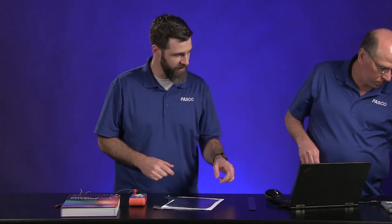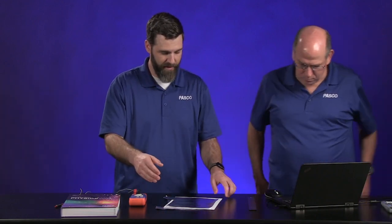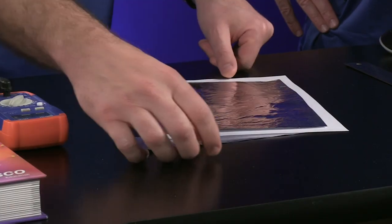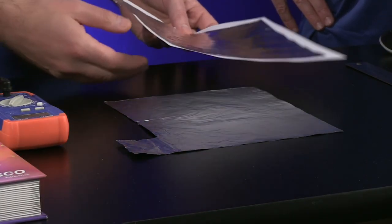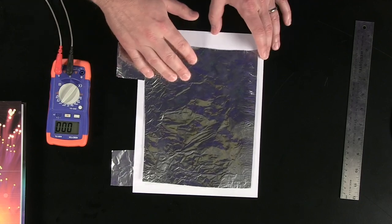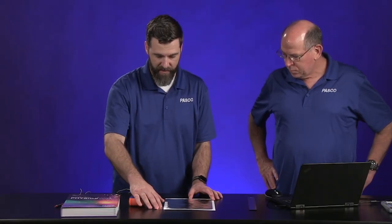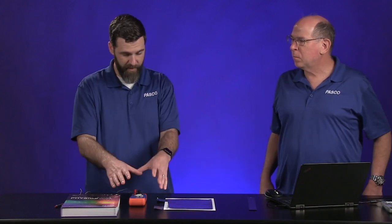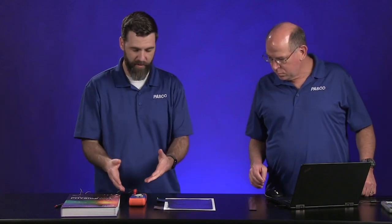Yeah, and so the trick is you've got two conducting plates that are separated by some sort of a dielectric. And in this case, in our capacitor, the dielectric is just a sheet of paper. Okay, and then the orange and blue thing there? This is a capacitance meter.